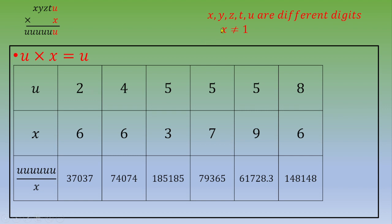Then you remember that x, y, z, t, u are different digits. So the first case, we've got 2 times 3 and 2 times 7. So this is not possible. Second case, we've got 2 times 7 and 2 times 4. This is not possible as well.